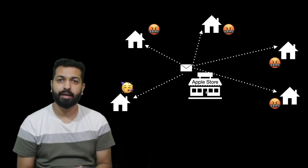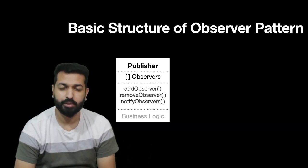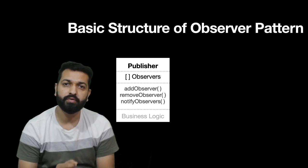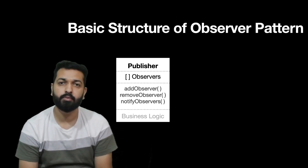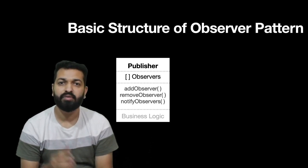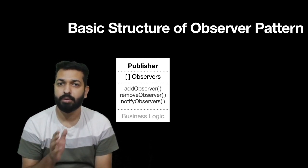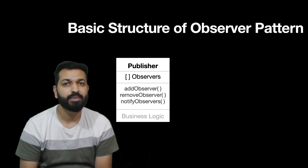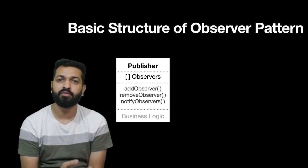Now that we have some idea of observer pattern, let's look at its structure and basic components. The first component is the publisher, also called subject. It has three important things: first, an array of observers used to store references of observers that this publisher is supposed to notify. Second, three methods — add observer, remove observer, and notify observers. When an observer wants to listen, it calls addObserver and its reference is stored in the observers array. To stop listening, it calls removeObserver. The third method, notifyObservers, is used by the publisher when the desired event takes place.